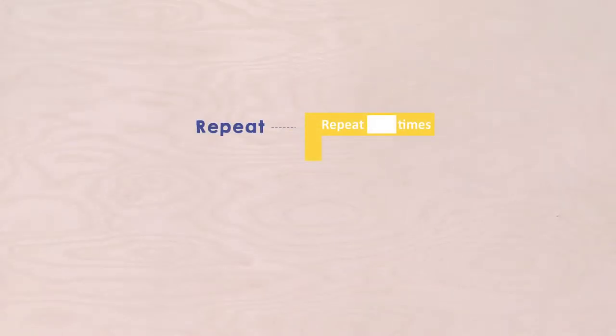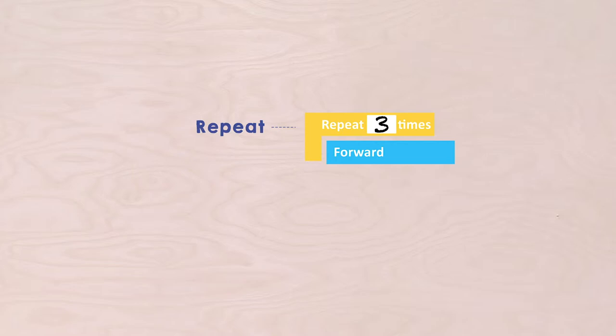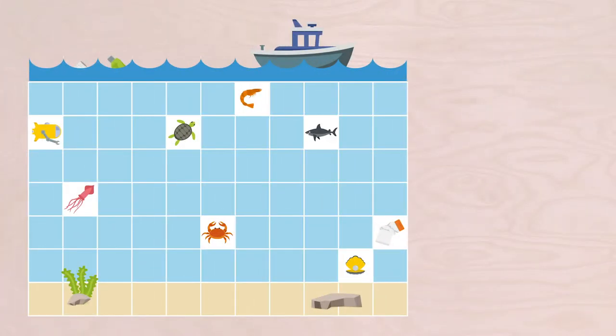Thank goodness there is a solution for that. You have already seen them. With the yellow REPEAT blocks you could make a part of the sequence a lot more efficient. The block that you place within this REPEAT block will be repeated as many times as you fill out here. Suppose I want to go three steps forward — then I write REPEAT THREE TIMES FORWARD. Try the same puzzle again and see if you can reach the plastic using the REPEAT blocks. Good luck.